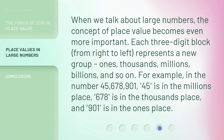When we talk about large numbers, the concept of place value becomes even more important. Each three-digit block, from right to left, represents a new group: ones, thousands, millions, billions, and so on. For example, in the number 45,678,901 — 45 is in the millions place, 678 is in the thousands place, and 901 is in the ones place.